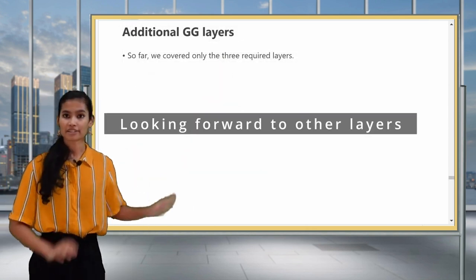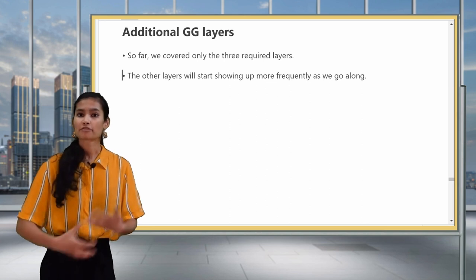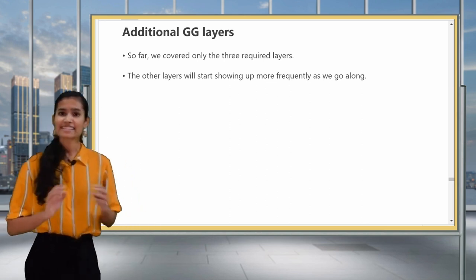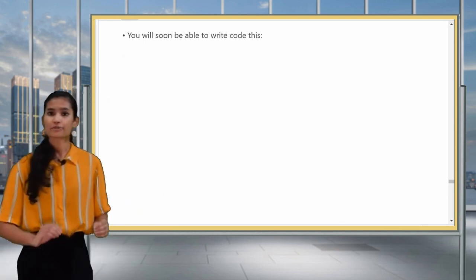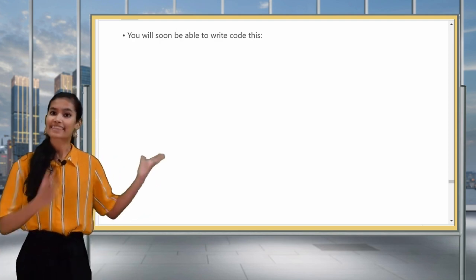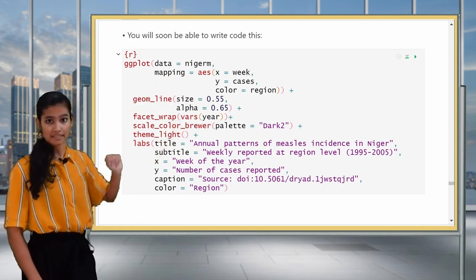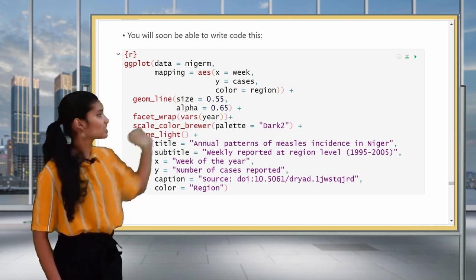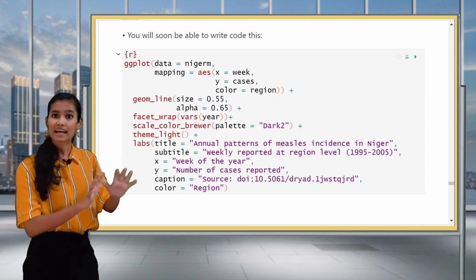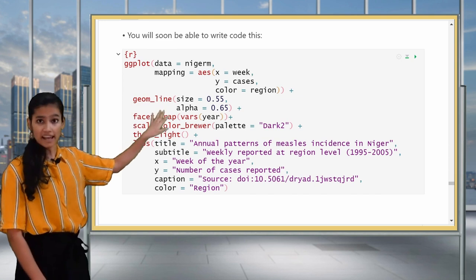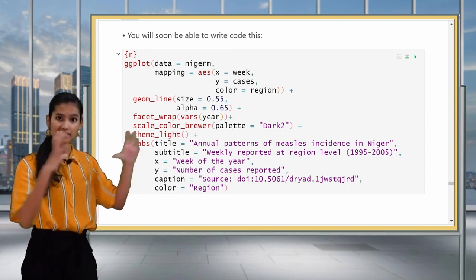So in this lesson, we've kept it simple and only covered the three basic layers data aesthetics and geometries. What about the other layers? We will see them more frequently as you go along in this course. Let's take a quick sneak preview of what that might look like using the Niger M data. Very soon, you'll be able to write ggplot code that looks like this. So here we have data equals Niger M and you'll notice some mappings that you recognize like x, y and color, fixed aesthetics, size, which we've done, but alpha we haven't covered yet, but it just makes the lines a little more transparent and geom lines.